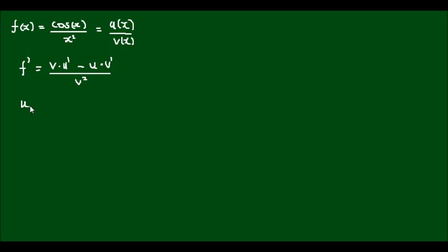So in my case u is equal to cos(x), and u differentiates to negative sin(x). v is equal to x squared, and this differentiates to 2x.